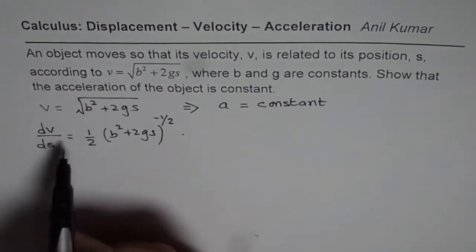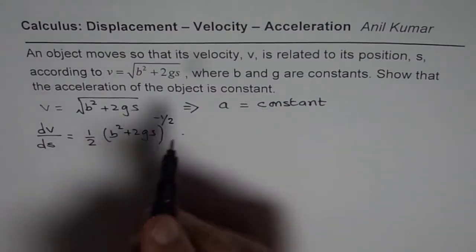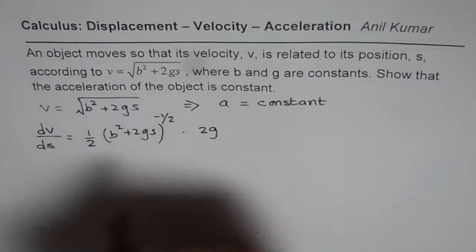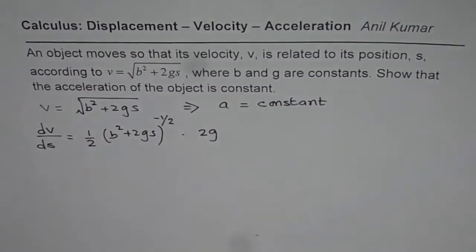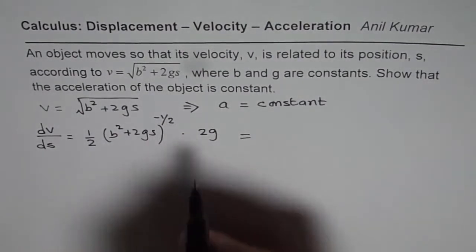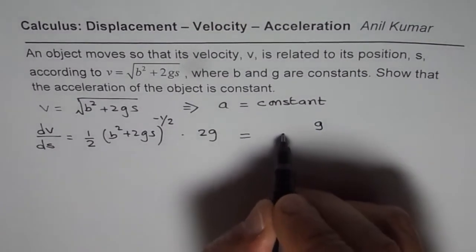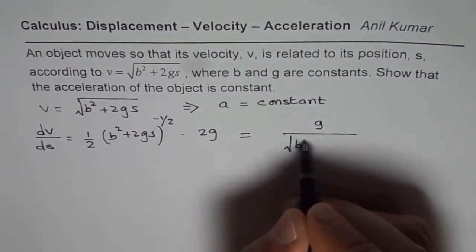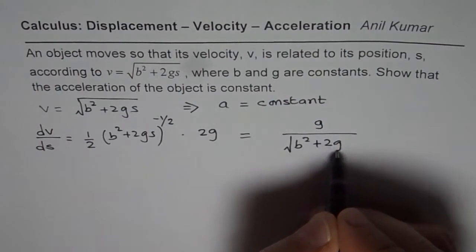Now b is a constant, g is a constant, so the derivative of 2gs should be 2g. So this is what we get as a derivative. Now this could be simplified—2 and 2 cancel—so what we get here is g/√(b² + 2gs).